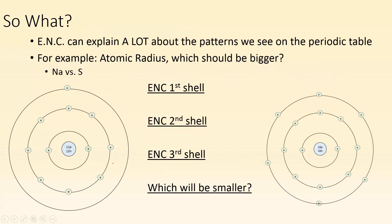So what? Why are we bothering with this? Effective nuclear charge can explain a lot about the patterns we see on the periodic table. For example, if we talk about atomic radius, it will help explain which atom should be bigger. Here I've picked sodium and sulfur to look at. They are in the same period, so they have the same number of principal energy levels — 3. Let's take a look at how their electrons experience effective nuclear charge.